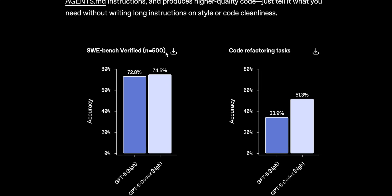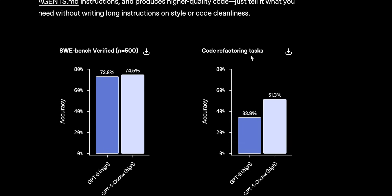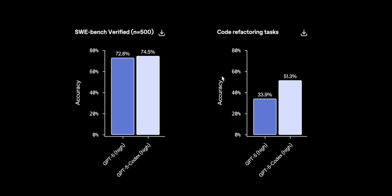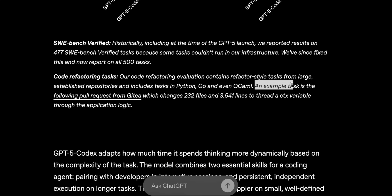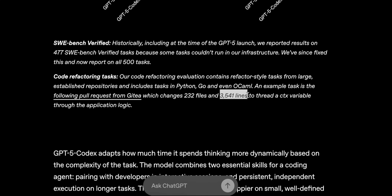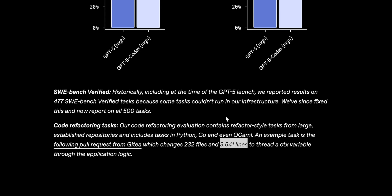In 500 tries, comparing GPT-5 High and GPT-5 Codex High, there's around a two percent improvement in SWE-bench — not that great, and the benchmark is also nearing saturation. On the other hand, for code refactoring tasks, debugging issues and fixing them, we do see a substantial improvement compared to GPT-5 High. OpenAI mentioned one example task included a pull request with changes in nearly 232 files and 3,545 lines of code.